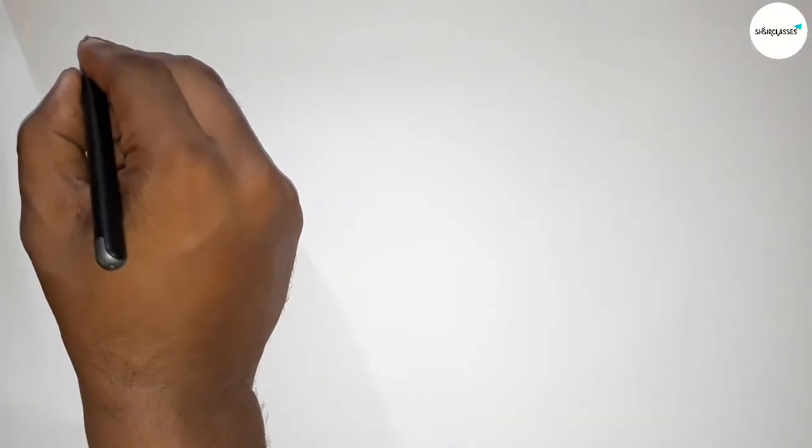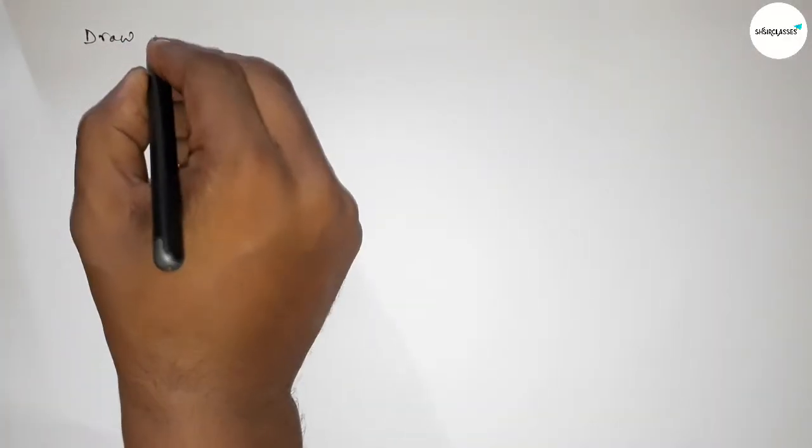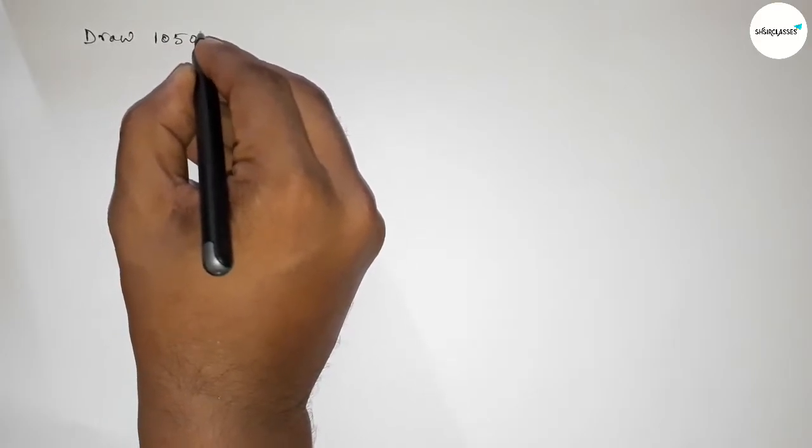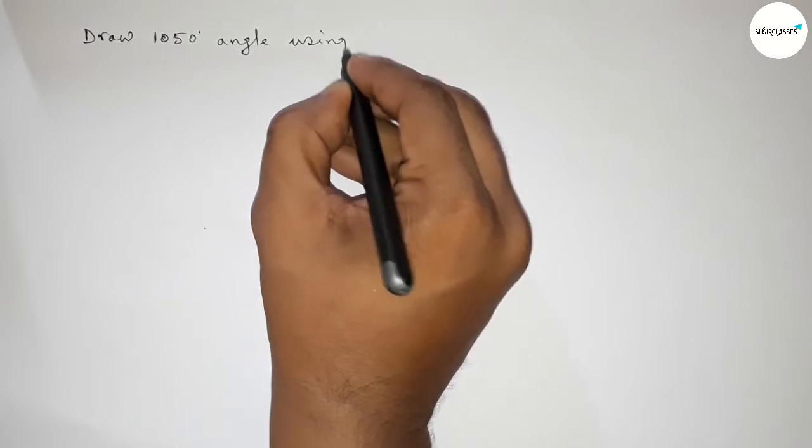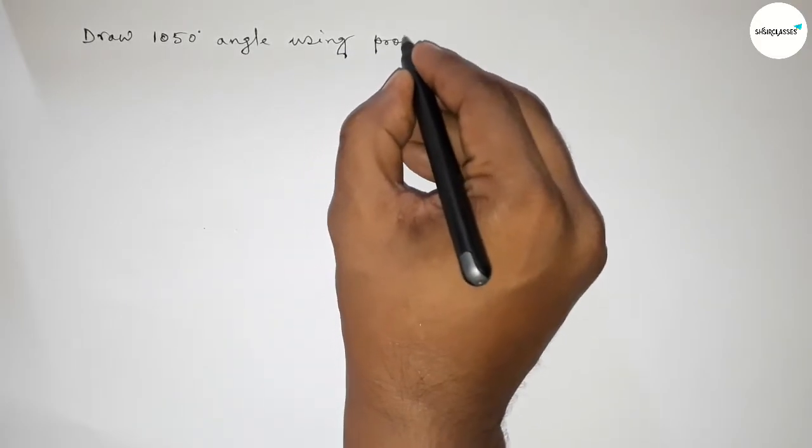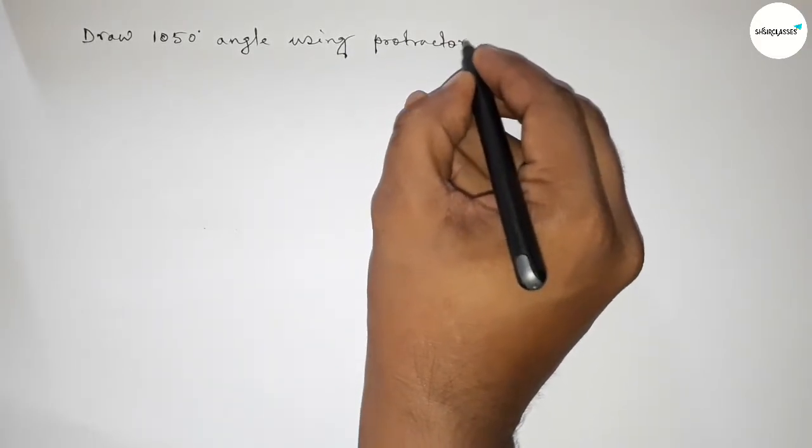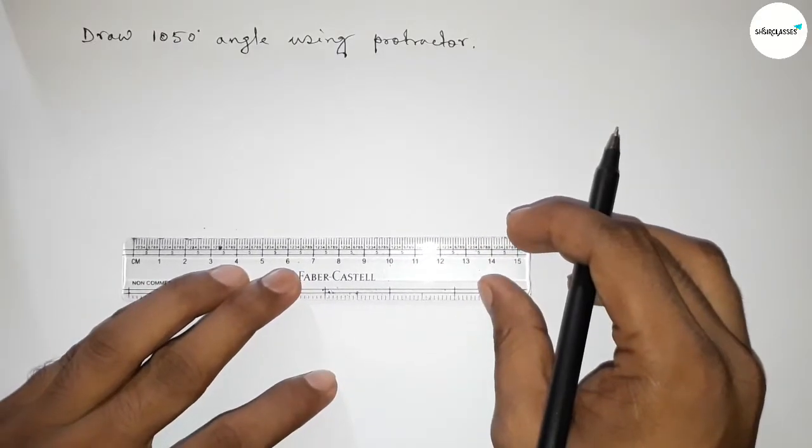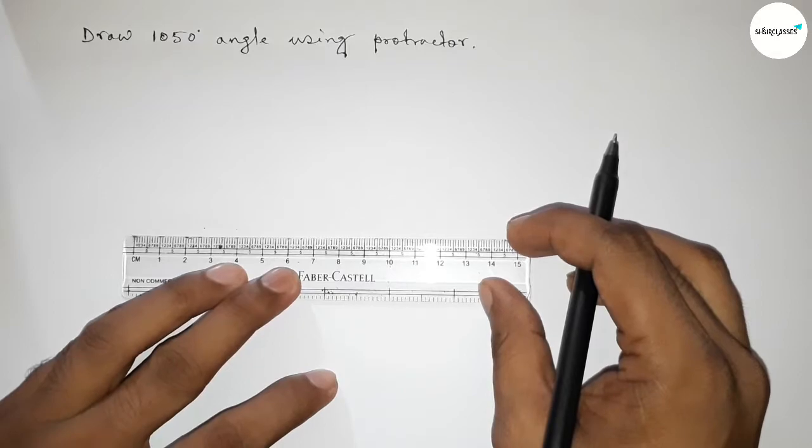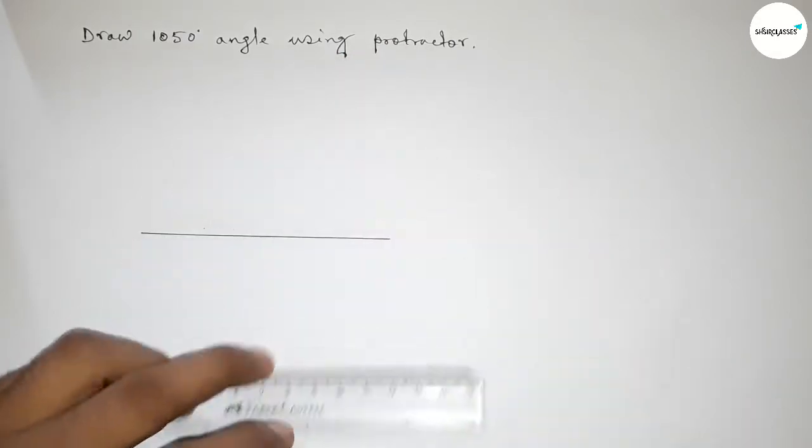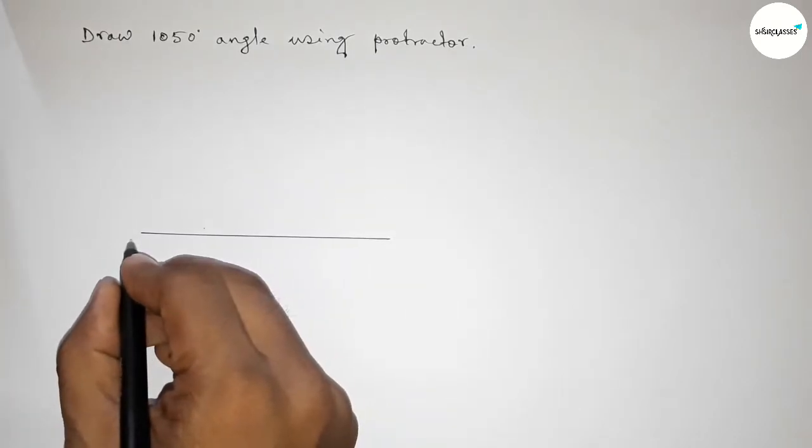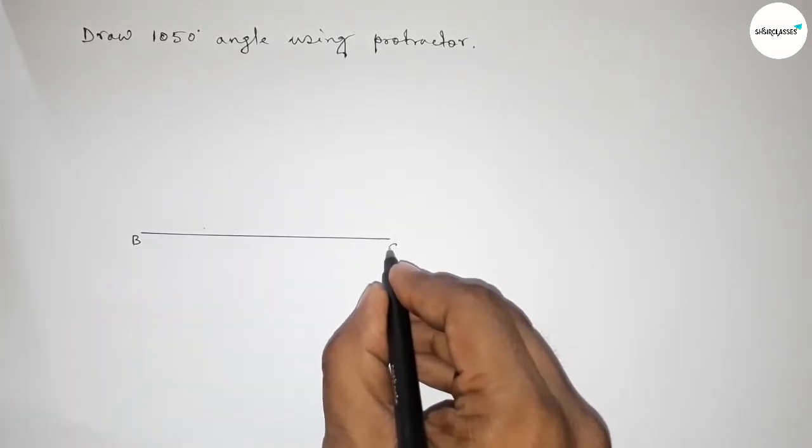Hi everyone, welcome to SI Share Classes. Today in this video we have to draw a 1050 degree angle by using protractor in an easy way. So let's start the video. First of all, we have to draw here a straight line of any length. So first drawing here a line of any length and taking here point B and here C.